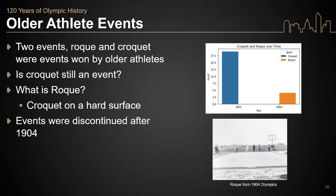If you look at the bottom of the gold medal distribution for athletes 50 and older, you'll see two events: Roque and Croquet. Roque is a version of Croquet played on a hard surface. I was surprised to see not only Roque but Croquet as an event, so I wanted to figure out if these are still events in the modern Olympics. The count bar chart shows that Croquet was played in 1900 and Roque in 1904. Since then, they've been discontinued. A photo on the bottom right shows participants playing Roque at the 1904 games.